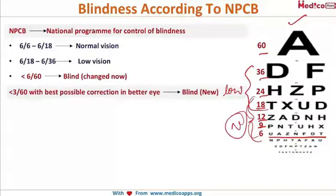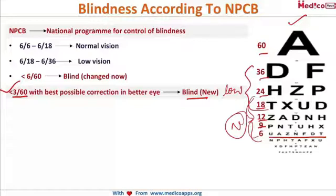However, the definition has now changed — anything less than 3/60 with best possible correction in the better eye is now known as blind. To break this down: best possible correction means no further improvement with glasses. If a patient has one eye with defective vision and one normal eye, we consider the better eye. If vision in the better eye cannot improve beyond 3/60, that is classified as blindness.